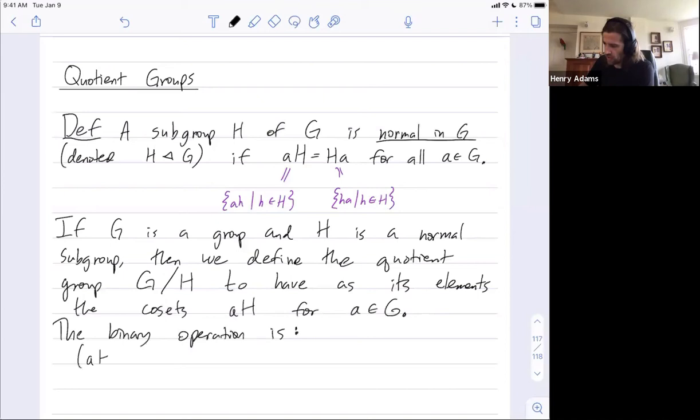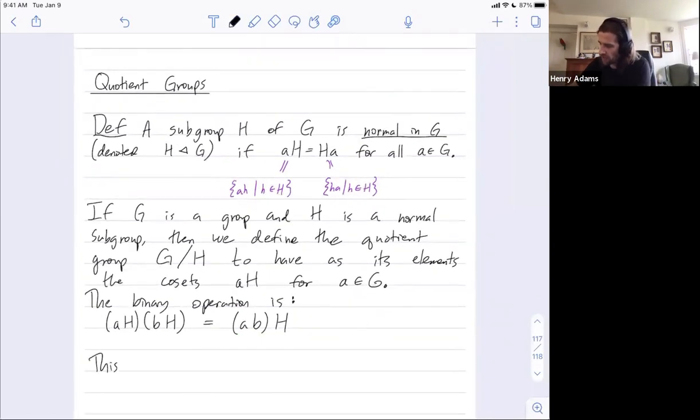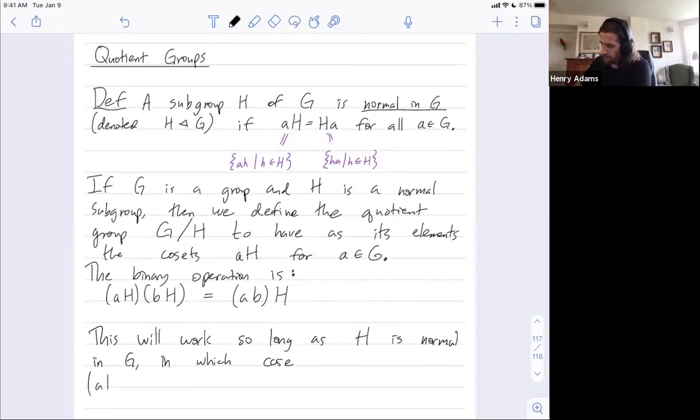So let's take two cosets AH and BH. Their product had better give me another coset and we're going to have it give this coset. When I combine the left coset by A with the left coset by B, I'm going to define that as the left coset by AB. The remark is this will work so long as H is normal in G, in which case we have the following. I can use associativity to write this as follows.